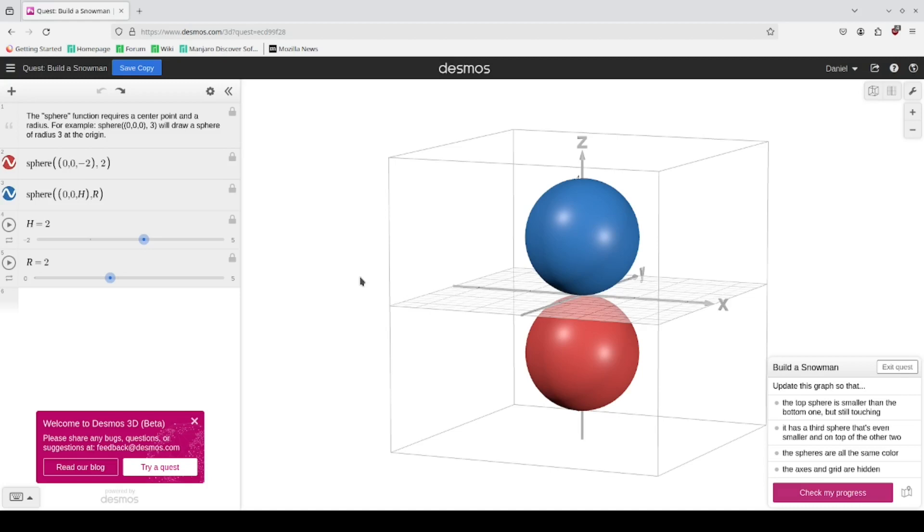To get to the quest, there's a few ways of getting to it. I will put a link to this quest in the description below. If you're getting here from the Desmos 3D page for the first time, you might see a pop-up inviting you to try out their quest. If you do, there's a button you can click here, Try Quest.